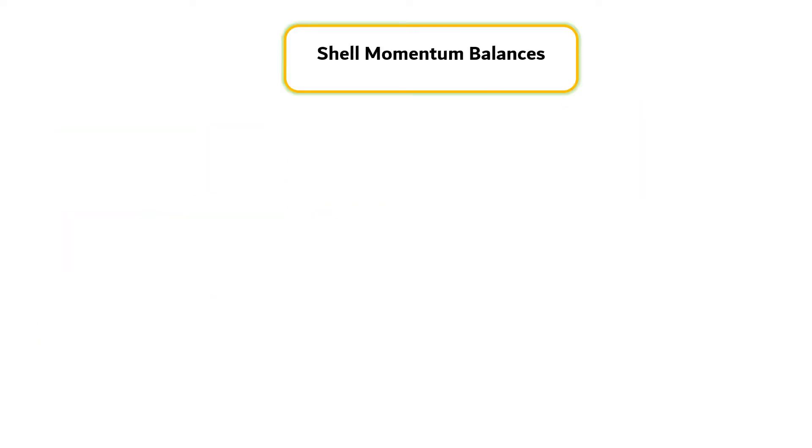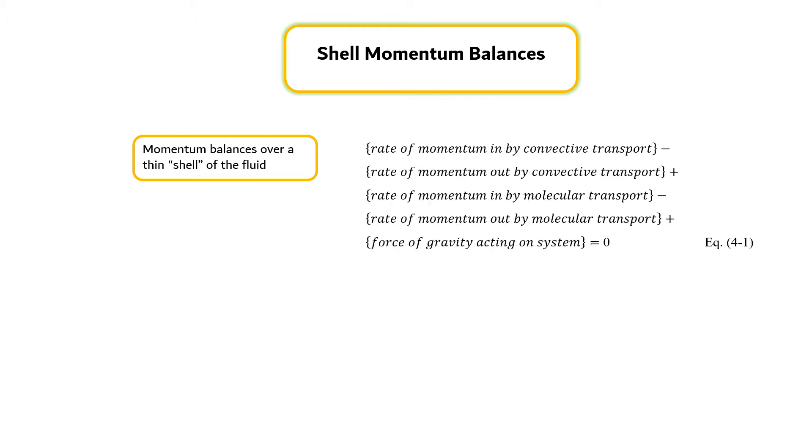Viscous flow problems can be solved by setting up momentum balances over a thin shell of the fluid. For steady flow, the momentum balance can be expressed by equation 4.1. This is a restricted statement of the law of conservation of momentum. In this module, the momentum balance is applied only to systems in which there is just one velocity component, which depends on only one spatial variable. In addition, the flow must be rectilinear.